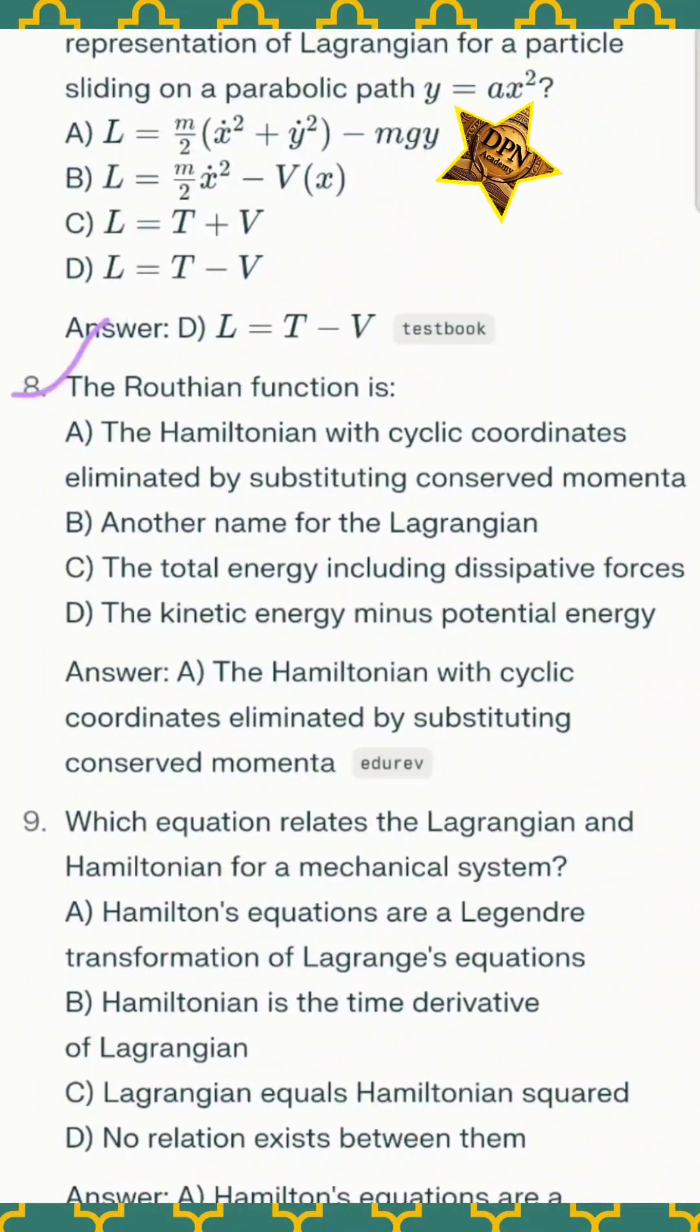Question number eight: the Routhian function is - the correct option A, the Hamiltonian with cyclic coordinates. The Routhian function is eliminated by substituting conserved momentum.